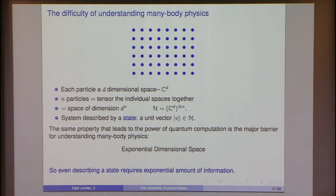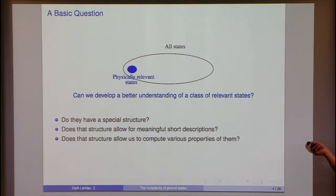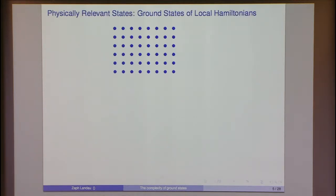This is a double-edged sword. The reason quantum computation is powerful is that it works on an exponentially large space, but that also makes understanding many-body physics really difficult. Even giving a description of a state, unless you have some clever way of doing it, requires an exponential amount of information. The basic difficulty is always trying to navigate around this: how do you do any sort of physics or computation under these circumstances?